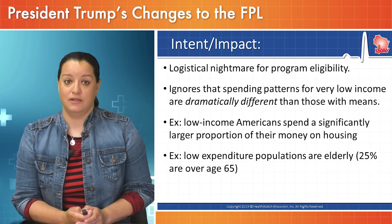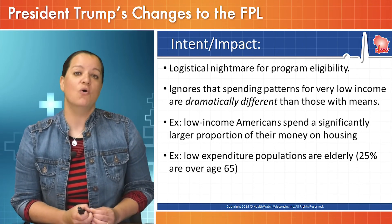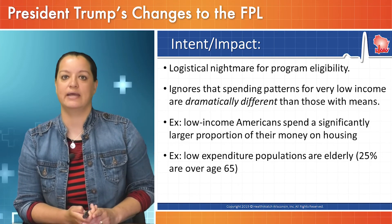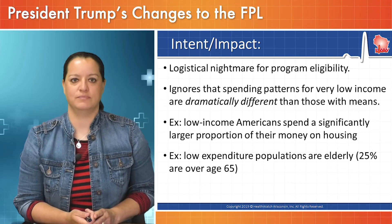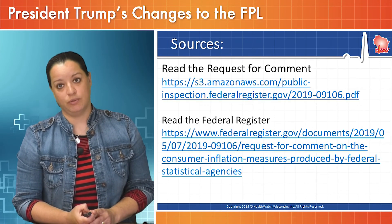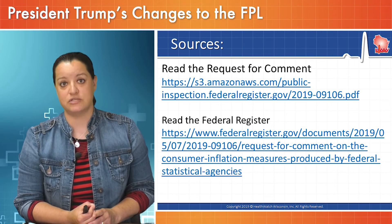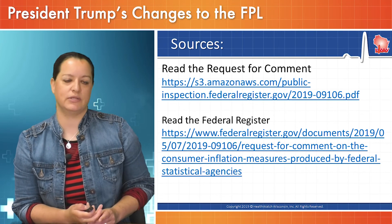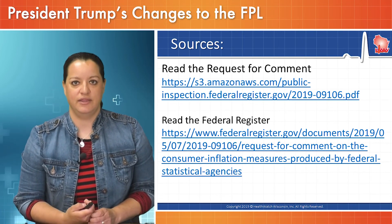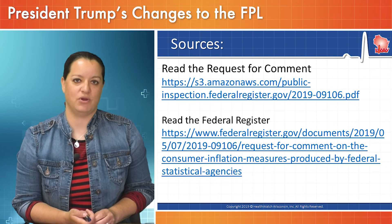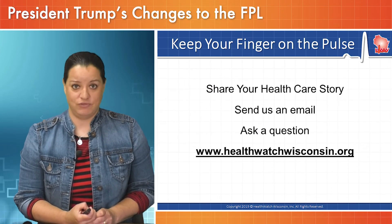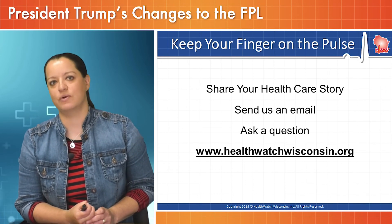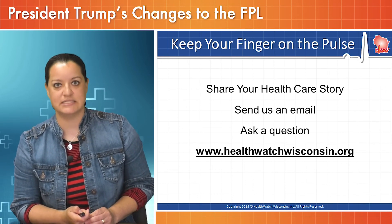The low-expenditure population, more than anything, is the over-65 crowd. What would substitution bias look like for elderly populations who rely on Medicare for healthcare coverage? You can read this request for comment yourself — use the description below to submit your own comments. You can also read the full version in the Federal Register, where they spell out their ability to substitute Consumer Price Index for something else. If you have a healthcare story or comments on how the federal poverty level is calculated, send your comments or questions to healthwisewisconsin.org.